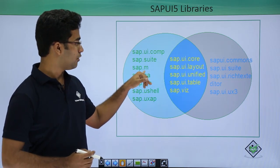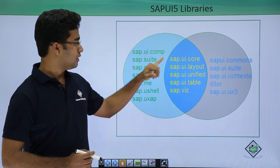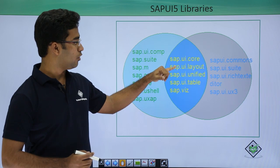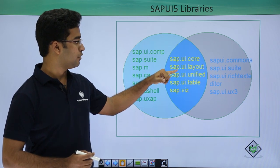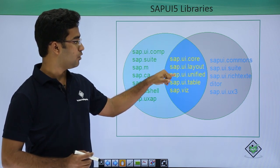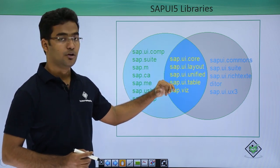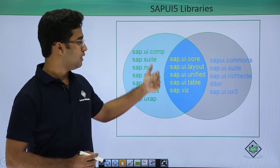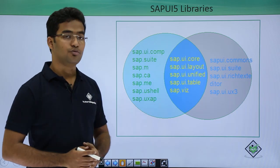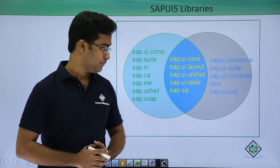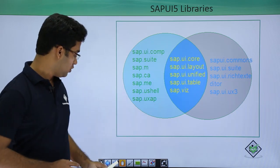sap.m library could be combined with sap.ui.core, sap.ui.layout, or sap.ui.unified. So these three can be used in any of the combinations.